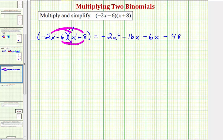Notice how the two middle terms are like terms. Negative 16 x minus six x is equal to negative 22 x. And therefore the simplified product is negative two x squared minus 22 x minus 48.